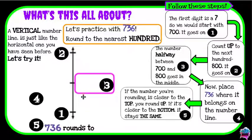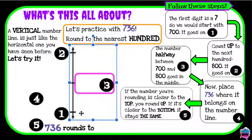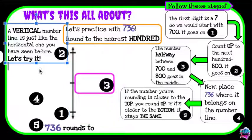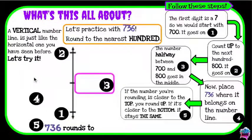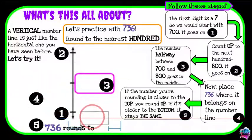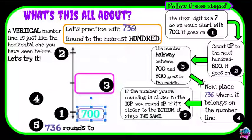So the first thing I need to do is find my hundreds that are going to go on the bottom and the top of my number line. To find my first hundred, I'm going to look at the first digit in the number I'm rounding. That first digit is a seven, so I'm going to start with the number 700. That is going to go on the bottom of my number line.